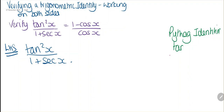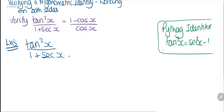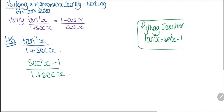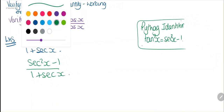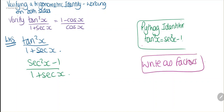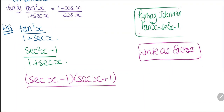We know that tan squared x is equal to secant squared x minus one, so I'm going to rewrite tan squared x as secant squared x minus one divided by secant of x. Now we need to simplify to eliminate our terms, so I'm going to rewrite by writing as factors: secant x minus one multiplied by secant x plus one, over one plus secant x, which is the same as secant x plus one.